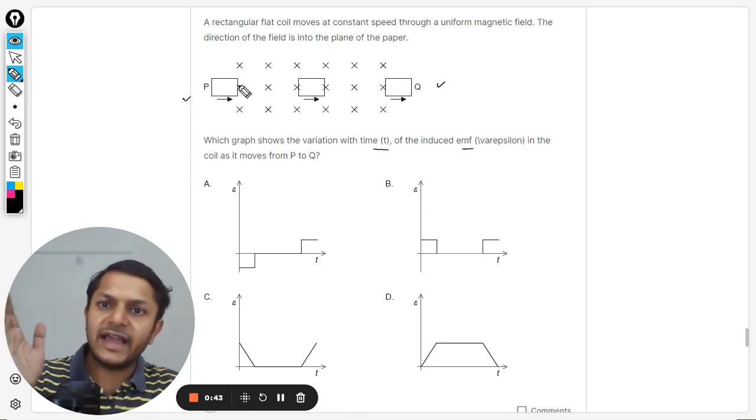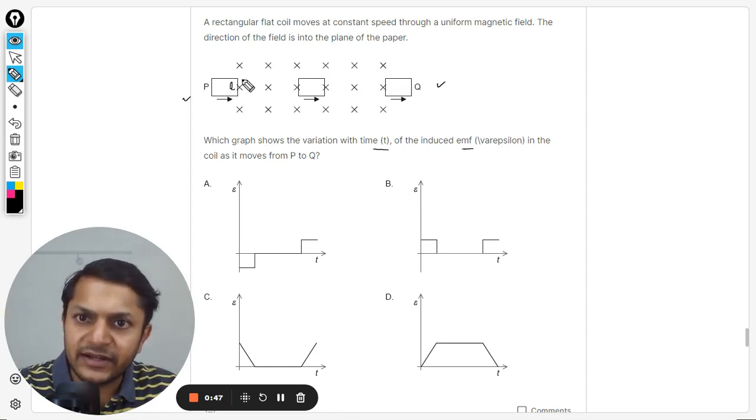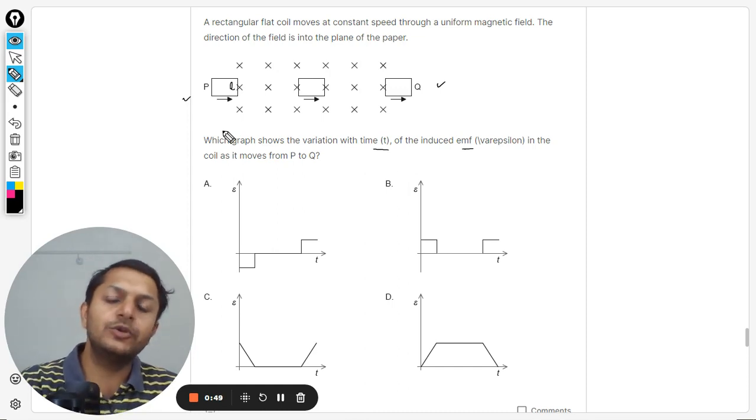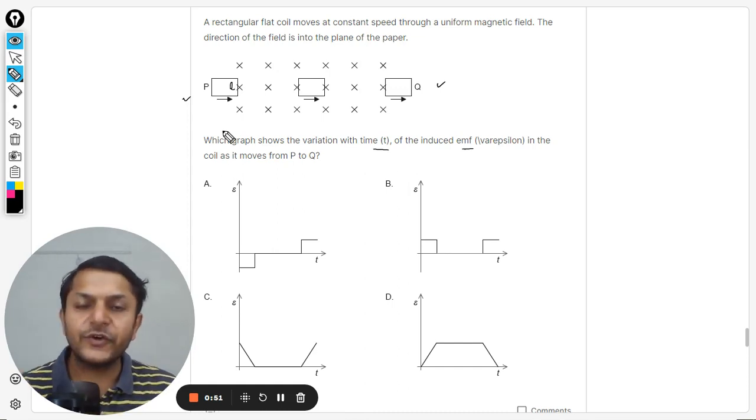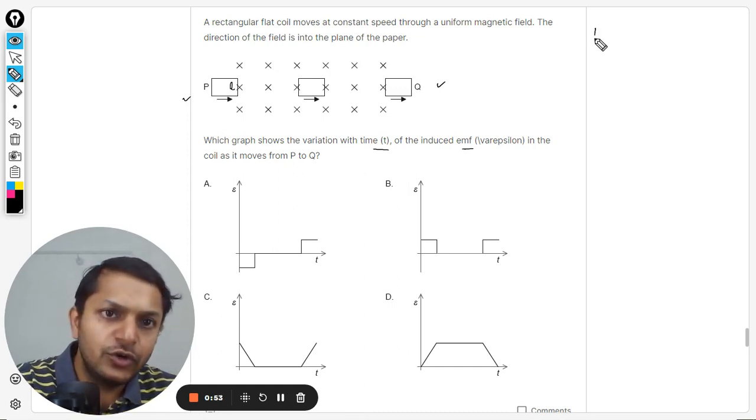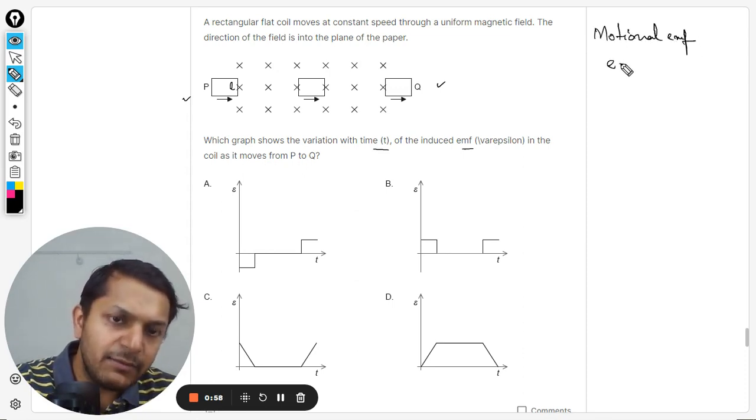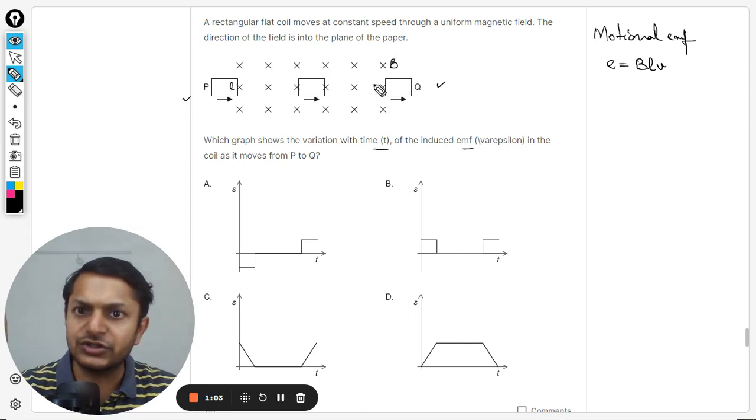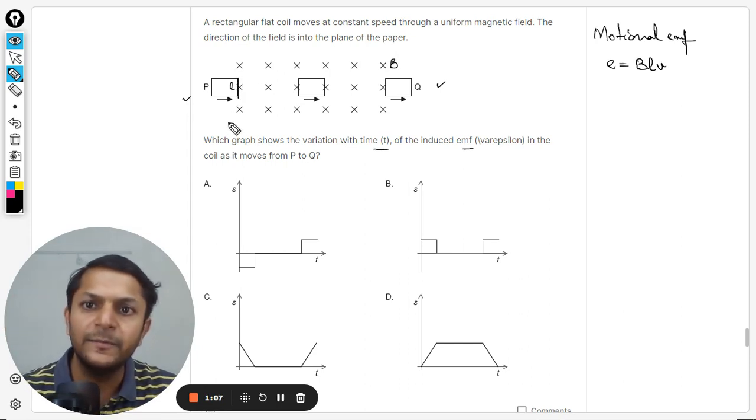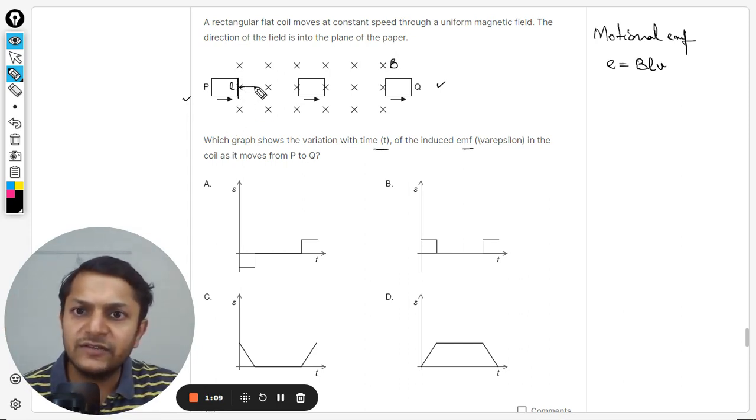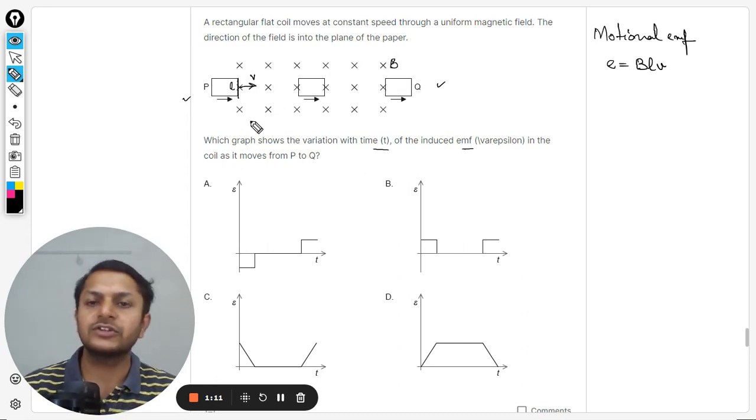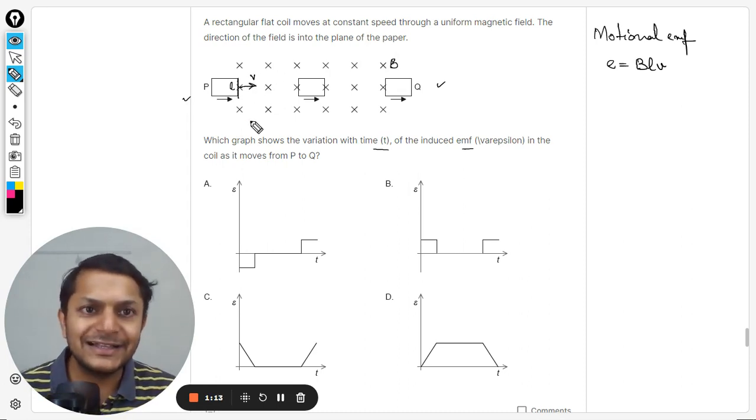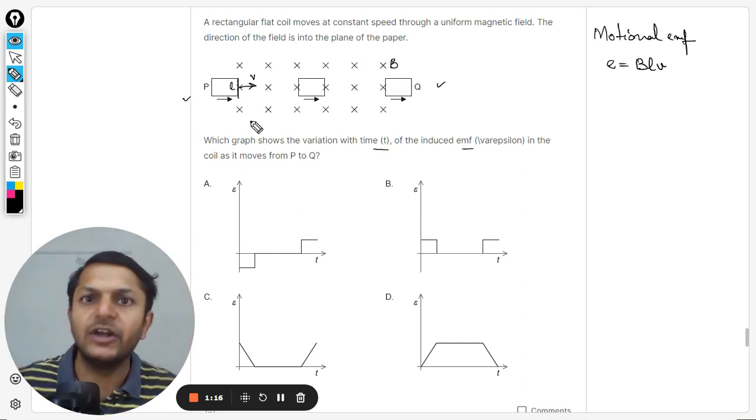First of all, when something is entering here, this length will be taken like this length. You might have done the questions for motional EMF, so we know that the EMF produced was given by the formula BLV. The magnetic field is a constant value, the length is also constant, and the velocity is also constant. So overall, a constant EMF will be produced without any doubt.